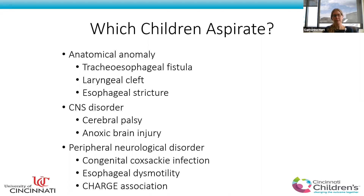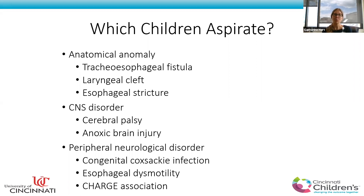When we think about children who are most at risk of aspirating, you can break them into a few groups. The big groups are those with an anatomic problem — a tracheoesophageal fistula, laryngeal cleft, or esophageal stricture. Then there's kids with a neurologic disorder, particularly central disorders like cerebral palsy, anoxic brain injury, or other causes of hypotonia. There are also peripheral neurologic disorders, congenital infections, esophageal dysmotility, and children with CHARGE syndrome, who have really high rates of aspiration.